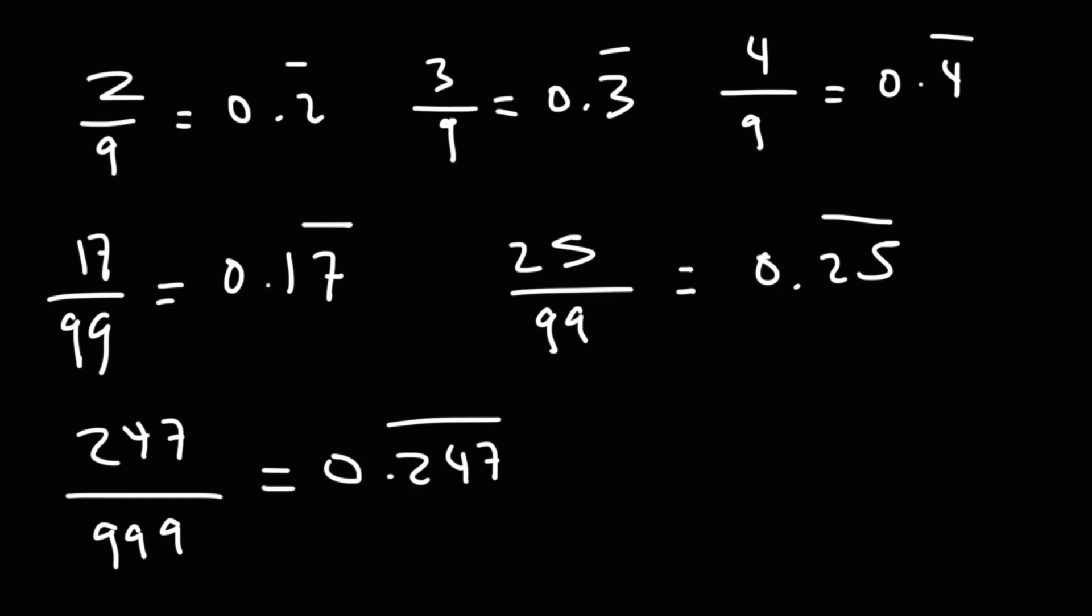Now, I do want to mention this disclaimer. It's not always the case. So for instance, 3 over 3 is not a repeating decimal. It's 1. 3 over 6 is 1 half, which is 0.5. However, whenever you divide by a multiple of 3, you do have the potential to get a repeating decimal.